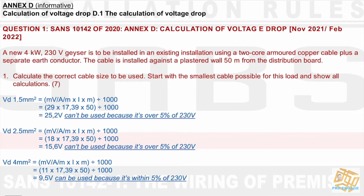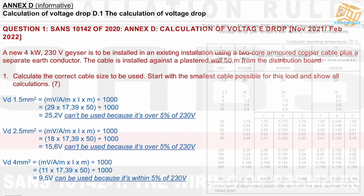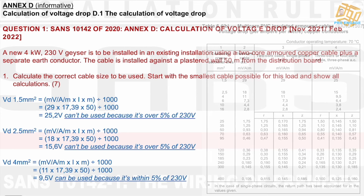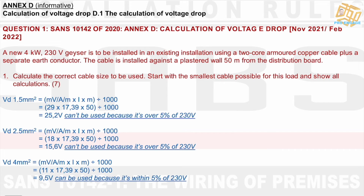At this point, I'm thinking: for a geyser I would normally use 2.5mm², but as we mentioned, a domestic installation rarely has the geyser 50 meters from the DB. So, moving on to 4mm² — using the same formula and going to the table, the millivolt per amp per meter value for 4mm² is 11. Using the same current and same 50m distance, divided by 1000, we get 9.5 volts. This value can be used because it's within 5% of 230V.